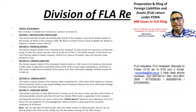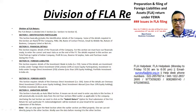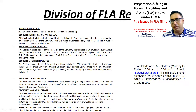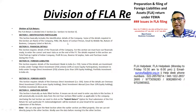What is the FLA return form? In the first section of the FLA return, there is an identification particulars section. There is basic information — the details of the company. Some details required in this section include: name of the company, PAN, CIN, name of the contact person, and email ID.